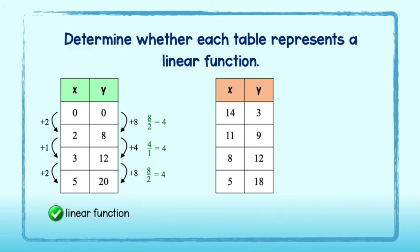Let's take a look at the second table. From 3 to 9, we must add 6. And from 14 to 11, subtract 3, for a rate of change of 6 over negative 3, or negative 2.